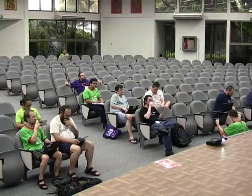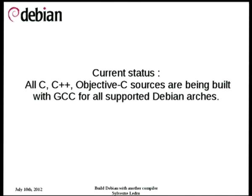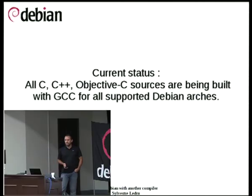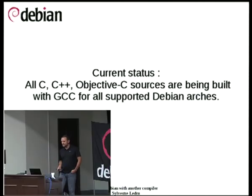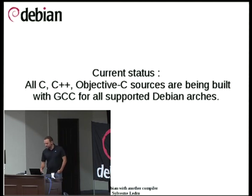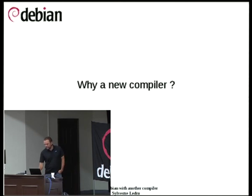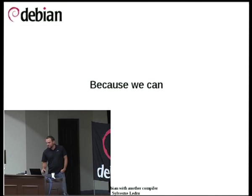So, what do we have currently in Debian? Most of you are already aware of that, but all the C, C++, and Objective-C that we've got in the archive are built with GCC on every architecture. So why am I trying to rebuild that with another compiler?